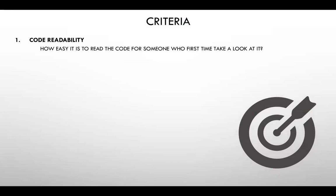First: code readability. The easiest test is to recruit a junior, show them the code, and see how easy it is for them to read it. I think perfectly readable code, even with advanced technologies, can be quickly understood by a beginner programmer after a brief introduction.